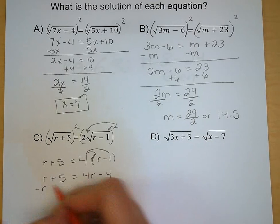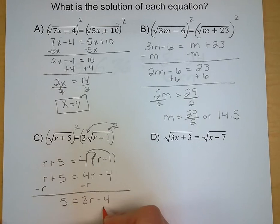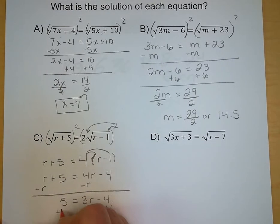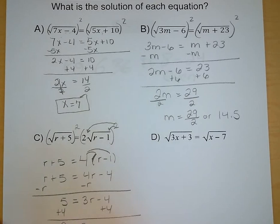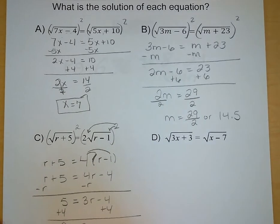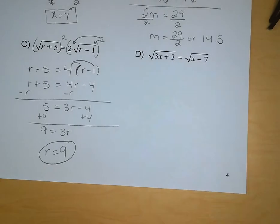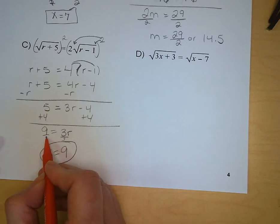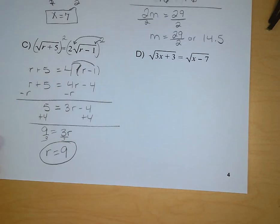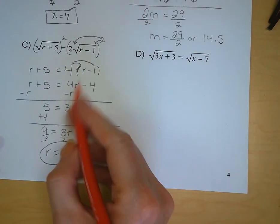Subtract an r from both sides. 5 is equal to 3r minus 4. Add 4 to both sides. So we get 9 is equal to 3r. Divide by 3. And we get r is equal to 3. That's what I meant.